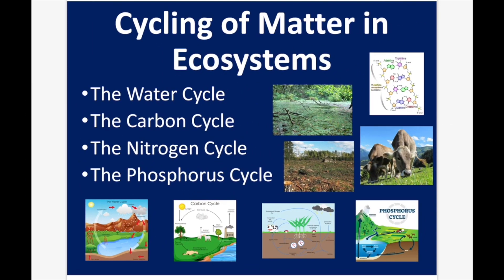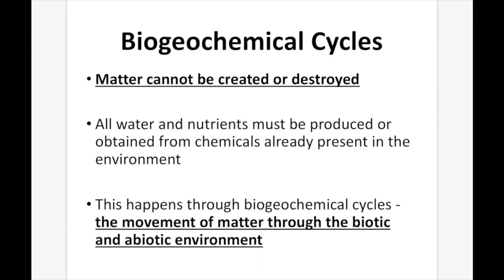Cycling of Matter and Ecosystems. In this lesson, we're talking about the water cycle, the carbon cycle, the nitrogen cycle, and the phosphorus cycle — all of which are biogeochemical cycles. Matter cannot be created or destroyed, and all water and nutrients must be produced or obtained from chemicals already present in the environment. This happens through biogeochemical cycles, which is the movement of matter through the biotic and abiotic environment.